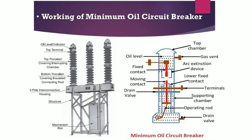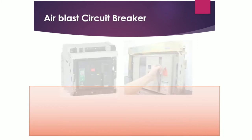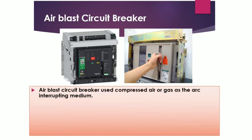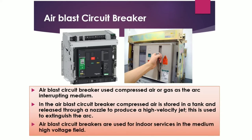In the air blast circuit breaker, compressed air or gas is used as the arc-interrupting medium. The compressed air is stored in a tank and directed through a nozzle to produce a high-velocity jet, which extinguishes the arc. The air blast circuit breaker is used for indoor service in the medium to high voltage field with medium rupturing capacity.